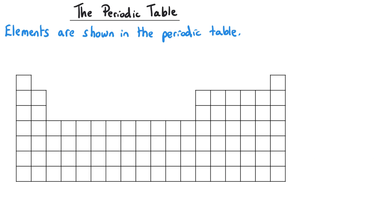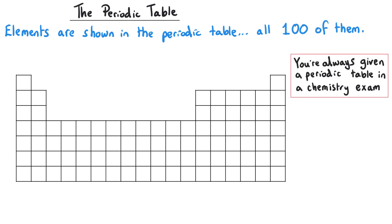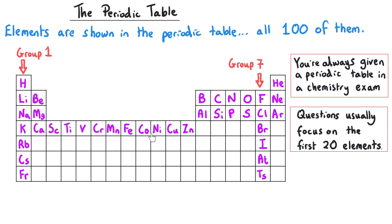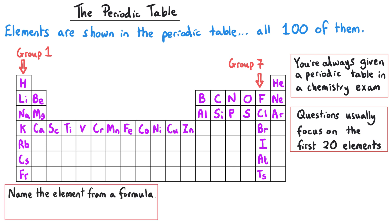The elements are all shown in the periodic table, and you always get a periodic table in a chemistry exam, so it's really important that you understand how to use it. Most questions will focus on the first 20 elements, although group one and group seven see a bit more use, and we also sometimes use the first row of the middle block. You could be given a formula and asked to name the elements, or asked to find an element's chemical symbol, so it's important to familiarise yourself with the periodic table.